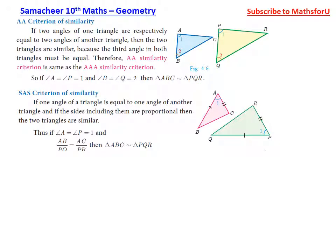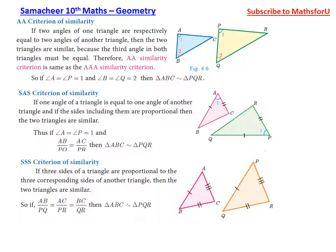If you want to check if two triangles are similar using SAS, you can verify that the two sides are proportional and the included angle is equal. The triple S (SSS) criterion means all three sides are proportional. If three sides of a triangle are proportional to the three corresponding sides of another triangle, then the two triangles are similar. So AB/PQ equals BC/QR equals AC/PR.